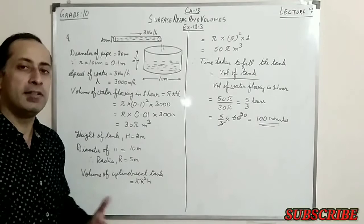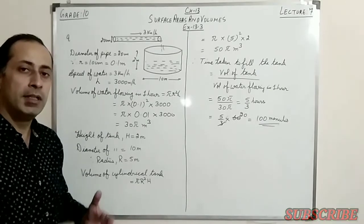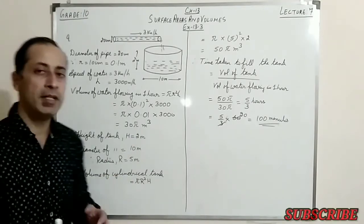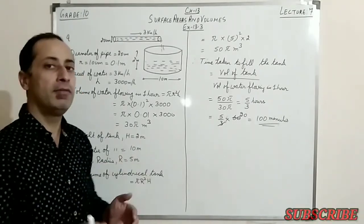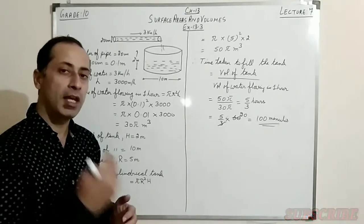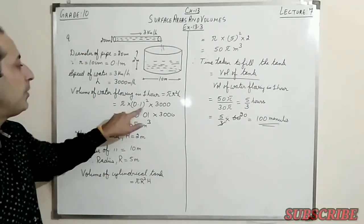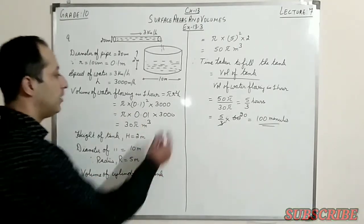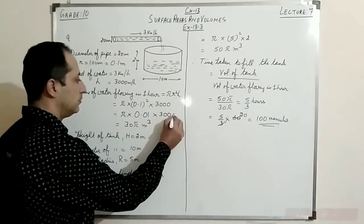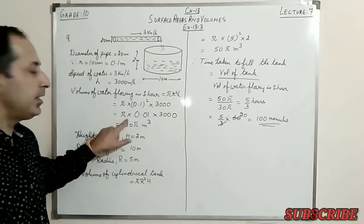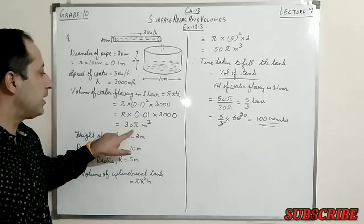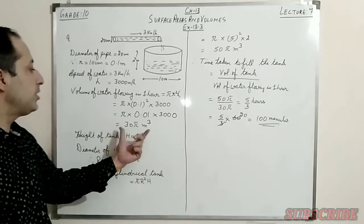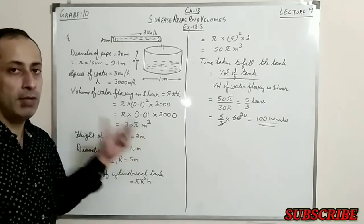Since the water flows through the cylindrical pipe, we use the volume formula for a cylinder: πr²h. Here r is the radius of the pipe (0.1 m) and h is the distance covered in 1 hour (3,000 m). So volume in 1 hour = π × 0.1² × 3,000. Squaring 0.1 gives 0.01, so this becomes π × 0.01 × 3,000 = 30π m³. In 1 hour, 30π m³ of water flows through the pipe.